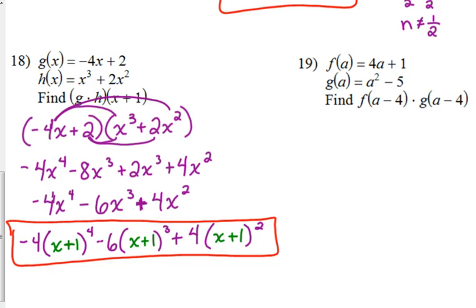Number 19. f of a minus 4 times g of a minus 4. I'm going to approach this one from the other perspective. I'm going to plug it in first just to show you that it works either way. I'm going to find f of a minus 4 first. 4 times a minus 4 plus 1, so that's 4a minus 16 plus 1, so minus 15.